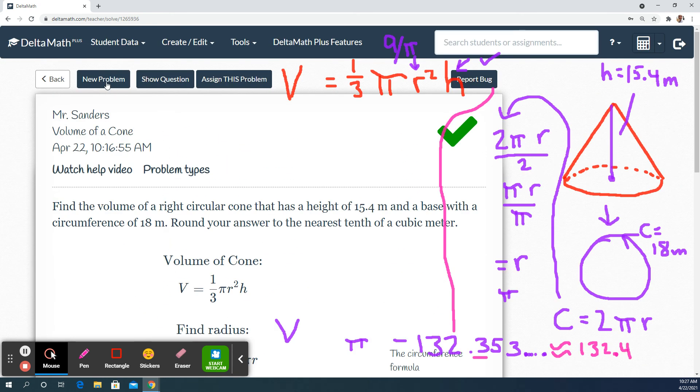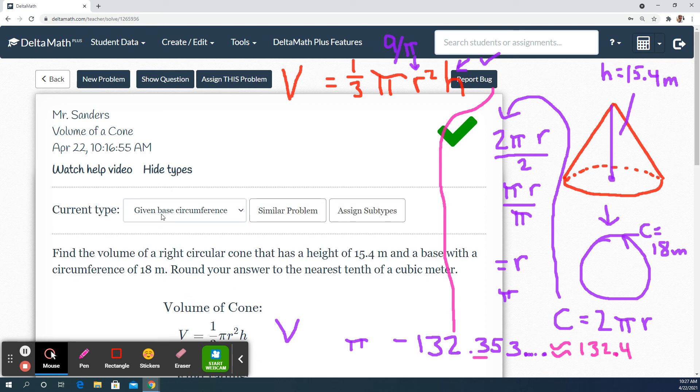Let's check different types of problems. See what else we got. So given base circumference, that's what we just did. Given a base radius, that would be the easiest one. And given a base diameter, we've dealt with those already with cylinders. So we would have to just divide it by two to find the radius. This was definitely the hardest one. And the rest should be easier or along these lines.